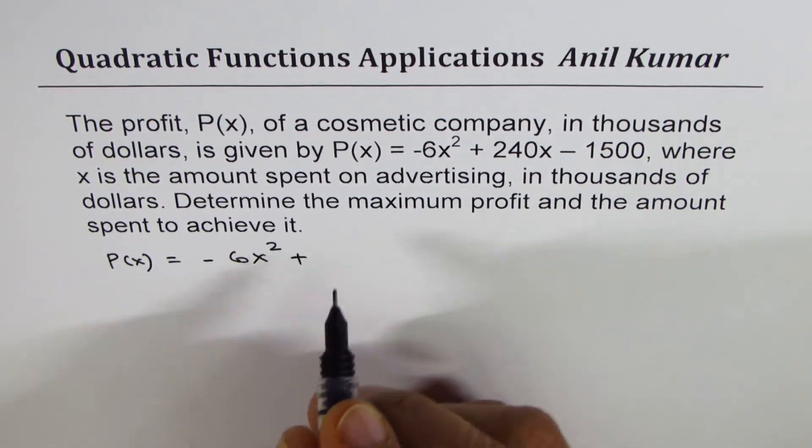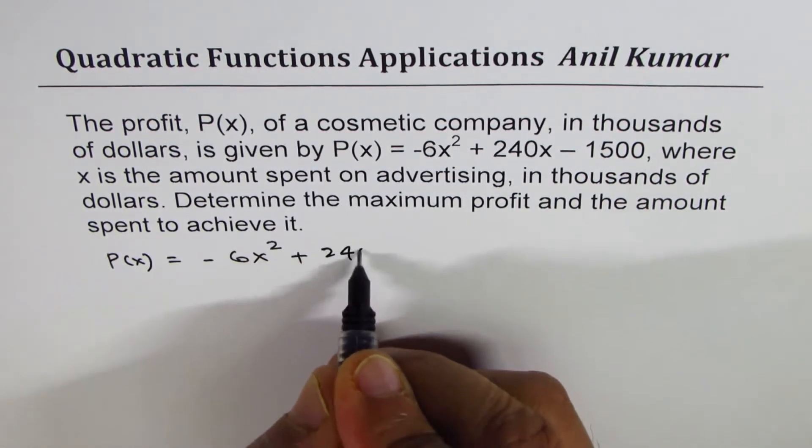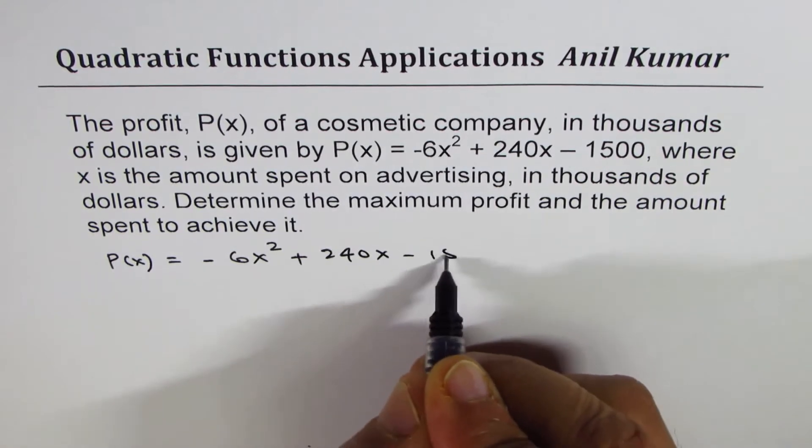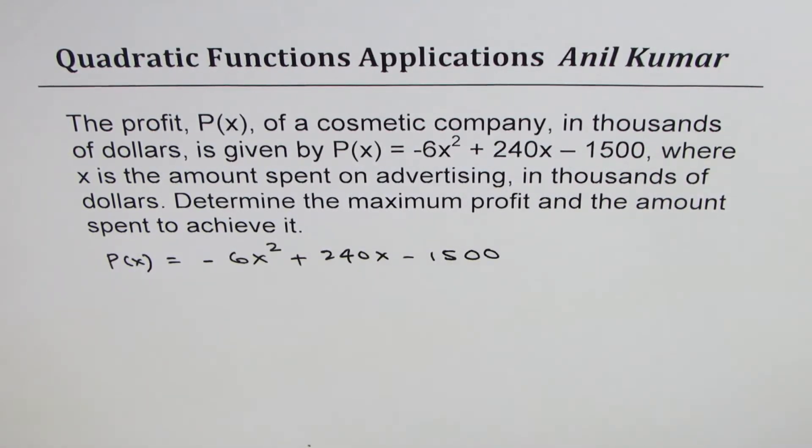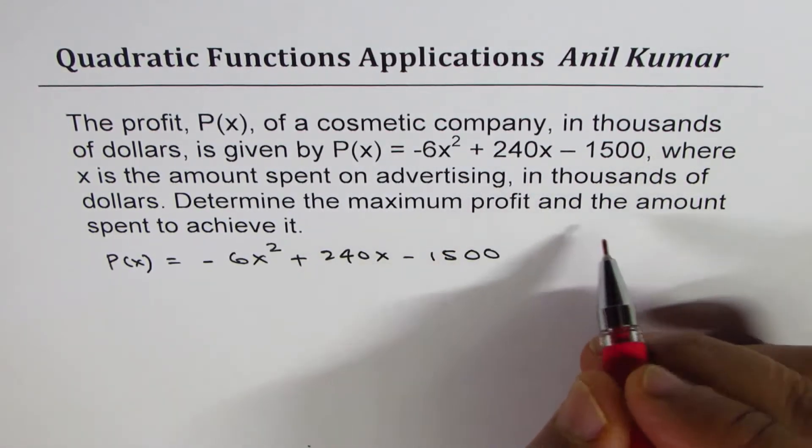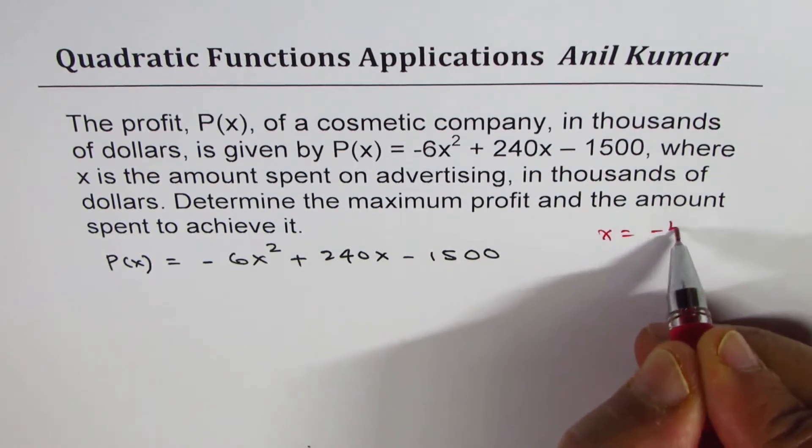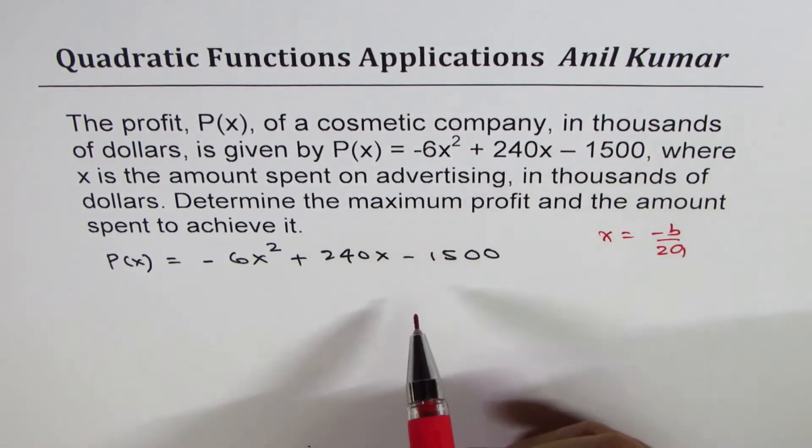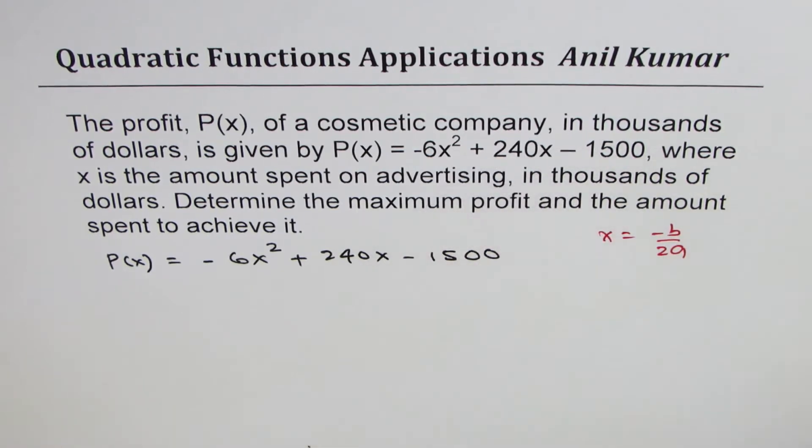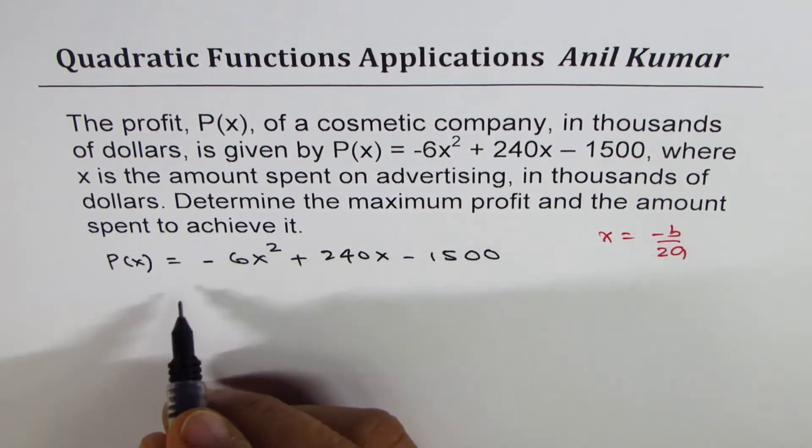Okay, so the equation is -6x² + 240x - 1500. Now some of you can also do this that x = -b/2a will give you maximum value of x, substitute and get the answer. With calculator this is a very efficient way. However, I'll do completing the squares.